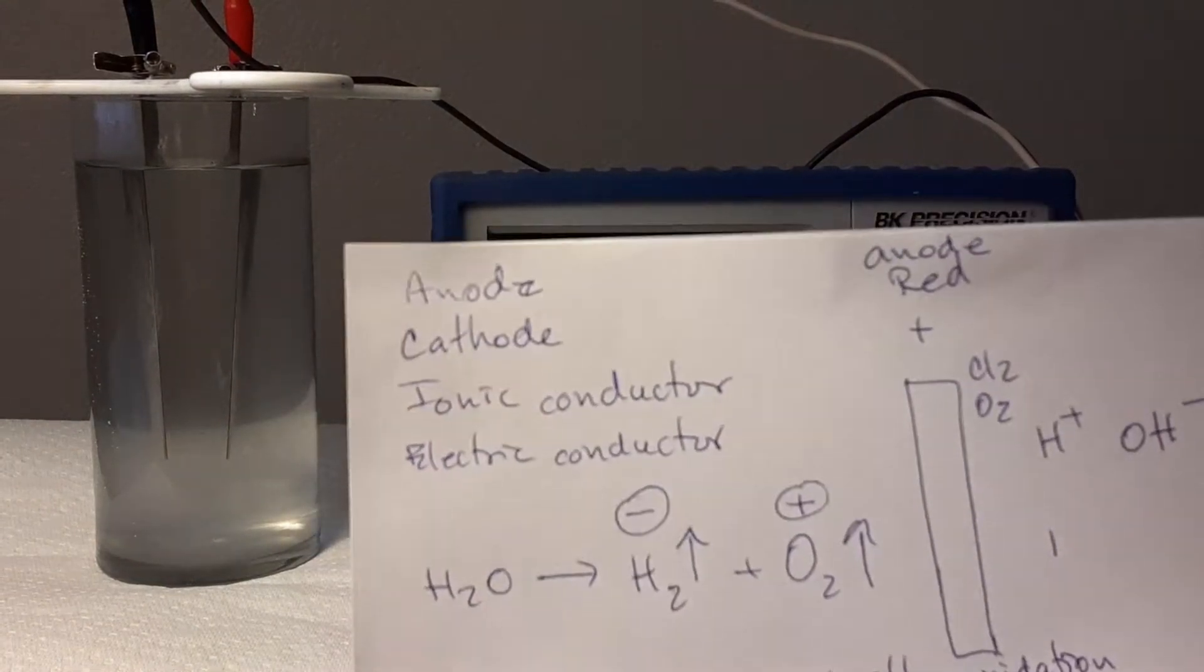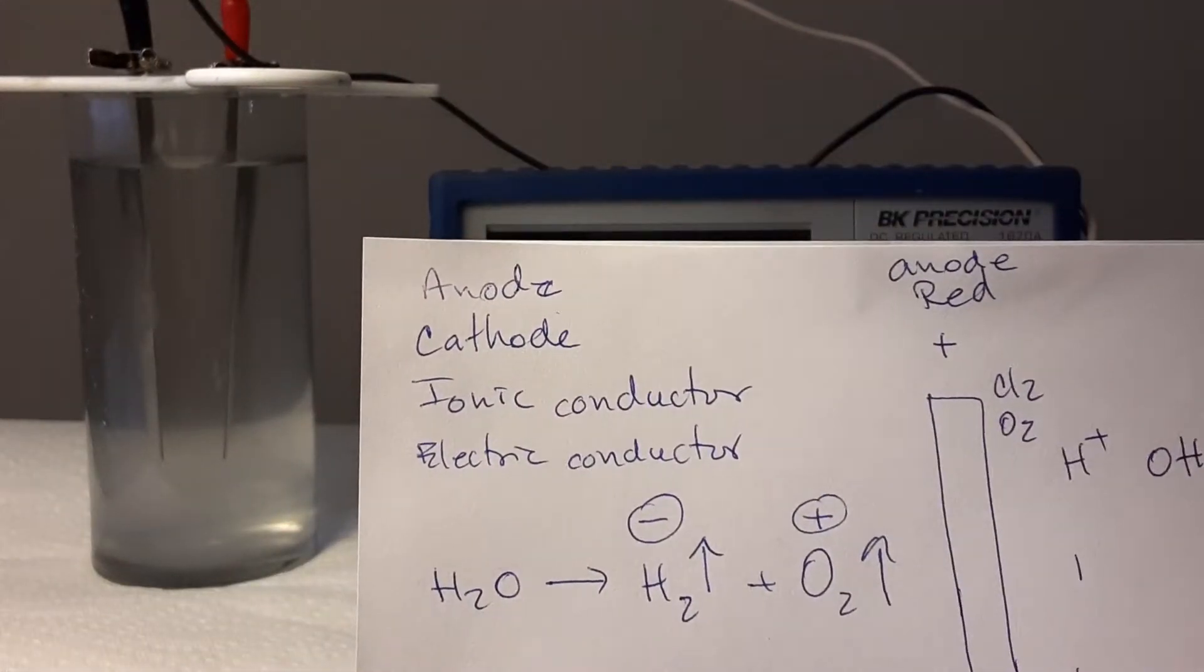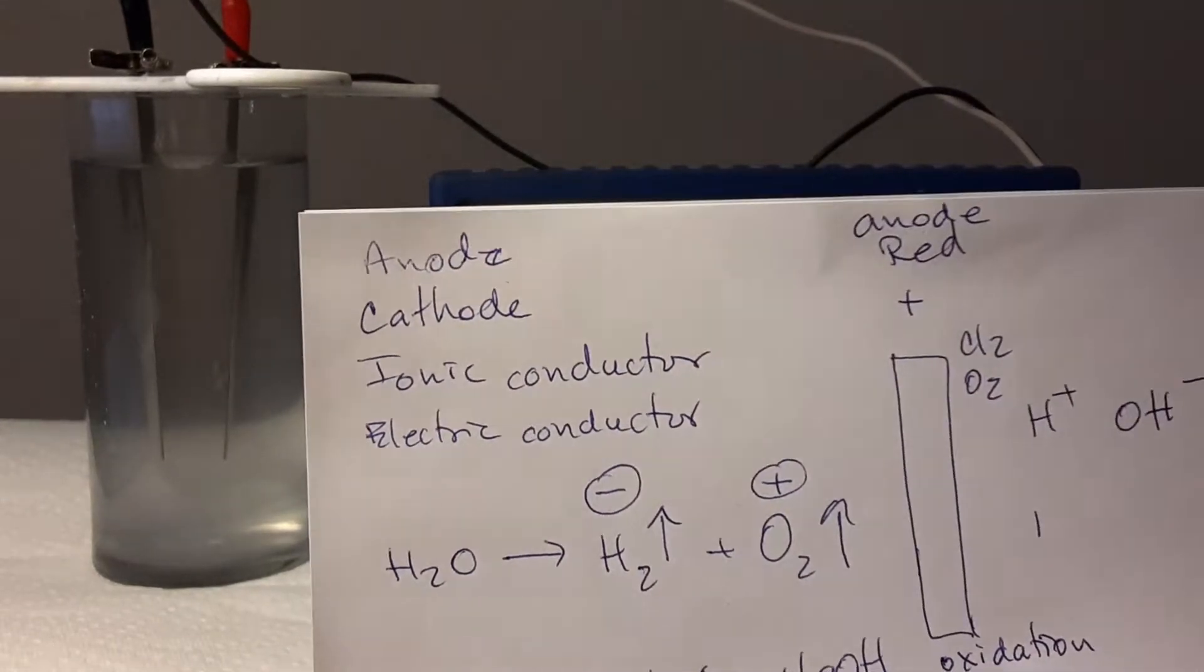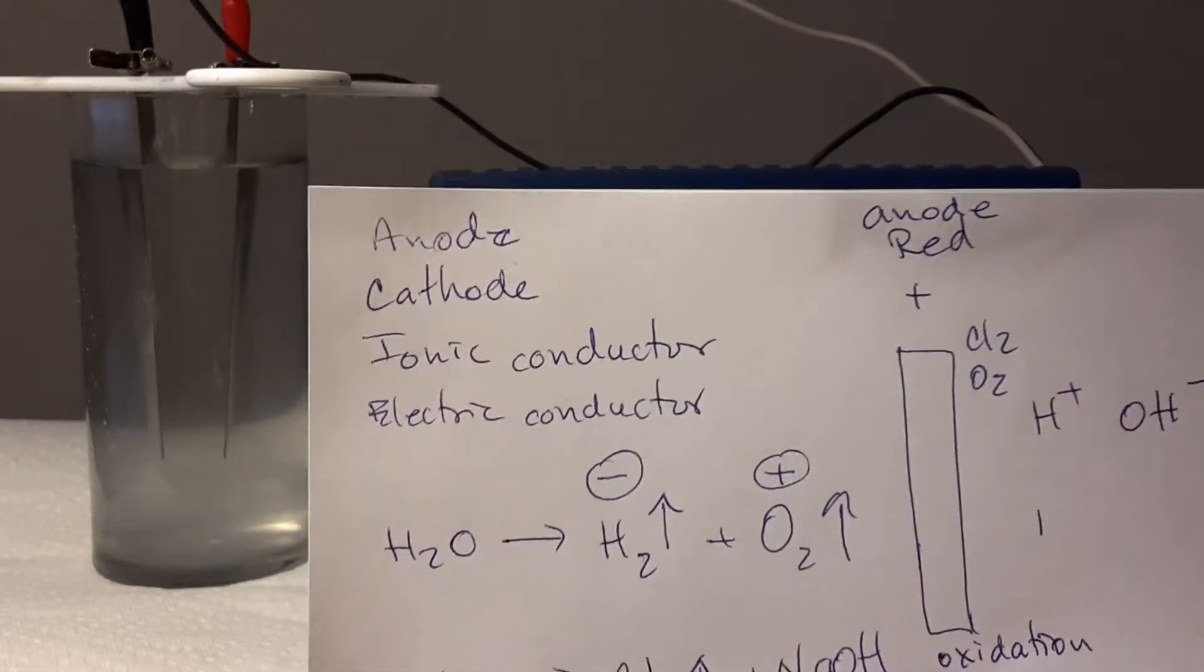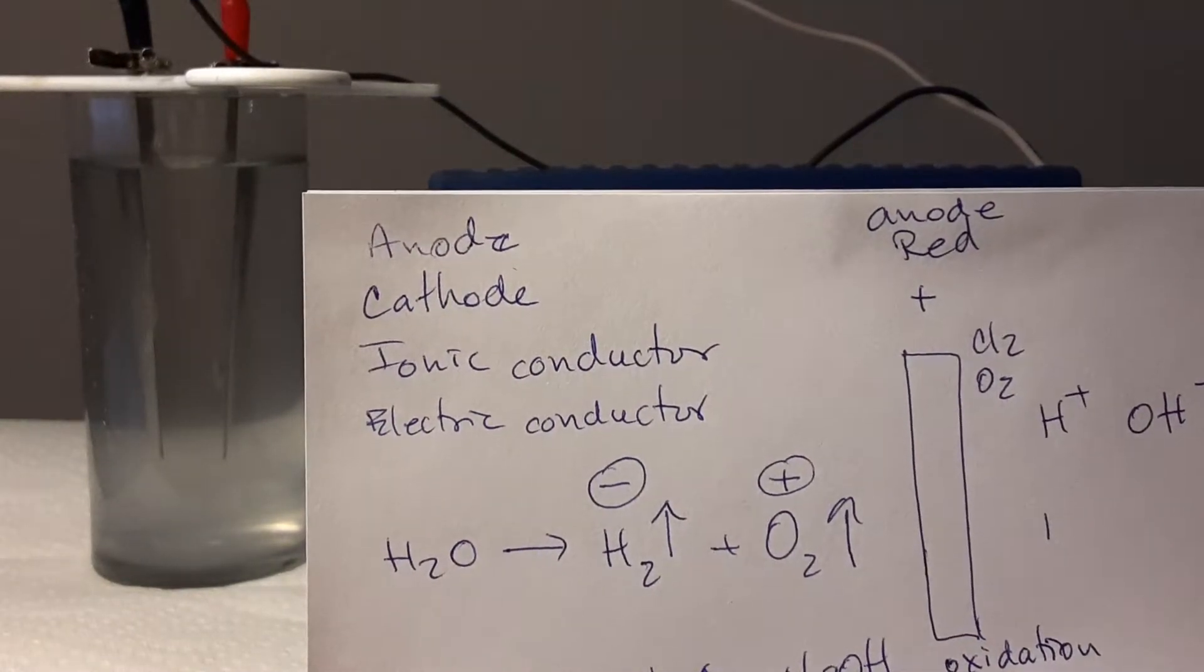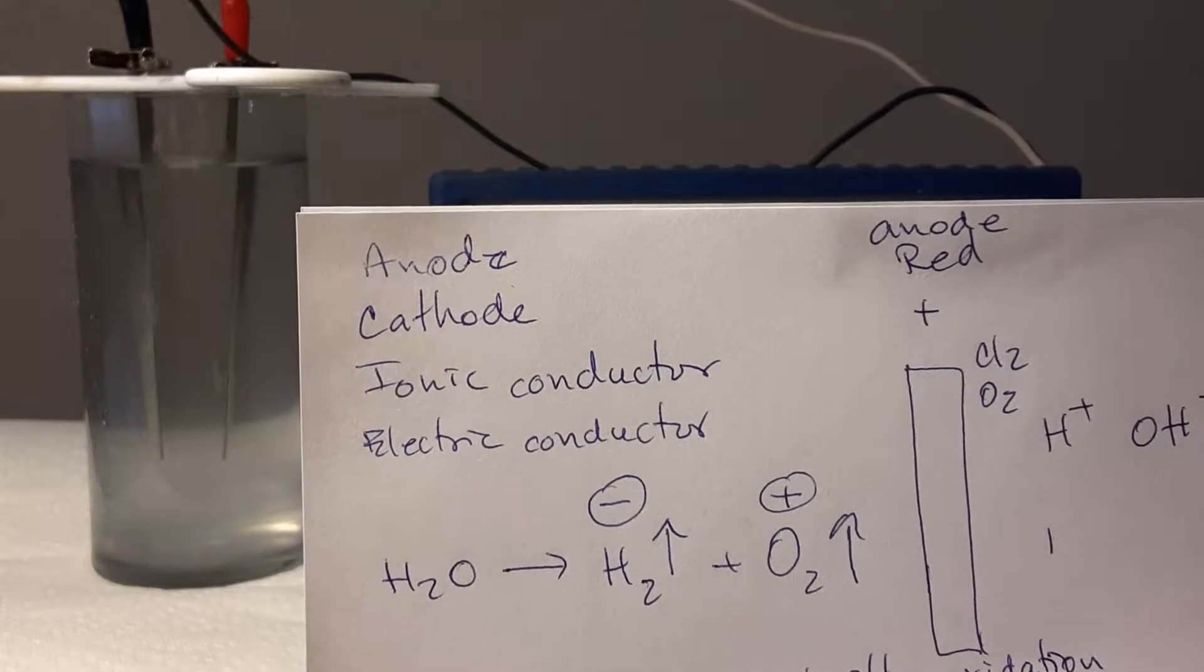To start, we must have one anode, one cathode, one ionic conductor - in this case we are using sodium chloride salt - and we need one electric conductor. In this case, we have cables connected to the power supply, one in red, one in black.